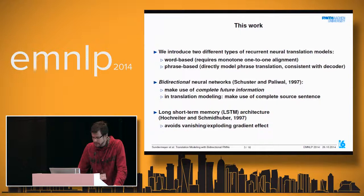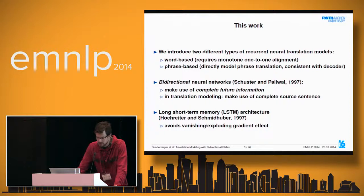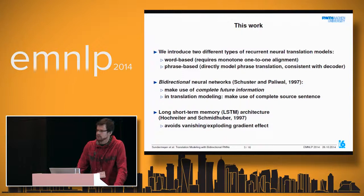We introduce two different types of recurrent translation models. One is word-based, requiring a monotone one-to-one alignment between source and target sequences—once that alignment exists, applying the recurrent network is fairly straightforward. The other is a phrase-based model, which makes sense because the phrasal alignment is a byproduct of phrase-based translation, so we don't need to artificially impose a one-to-one alignment.